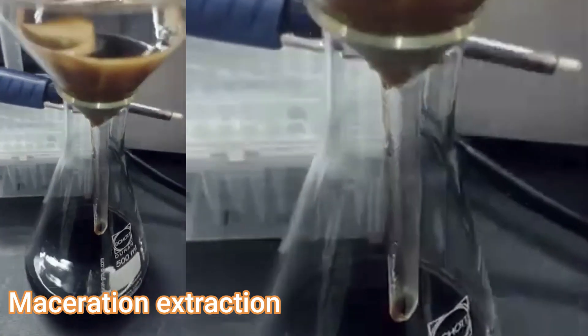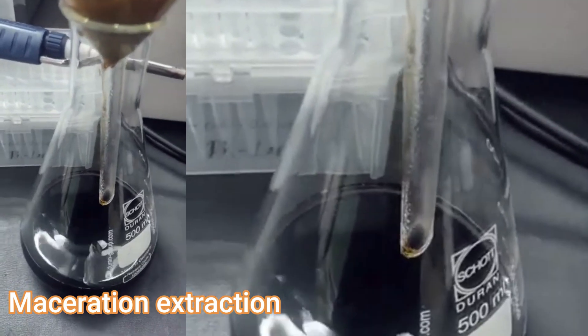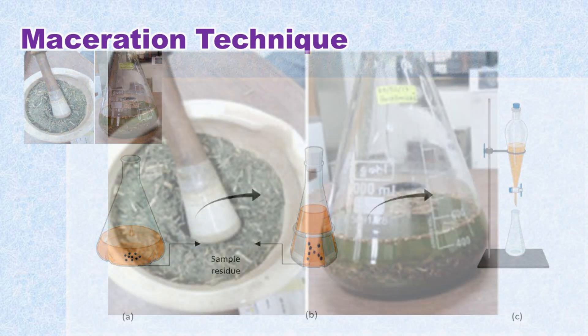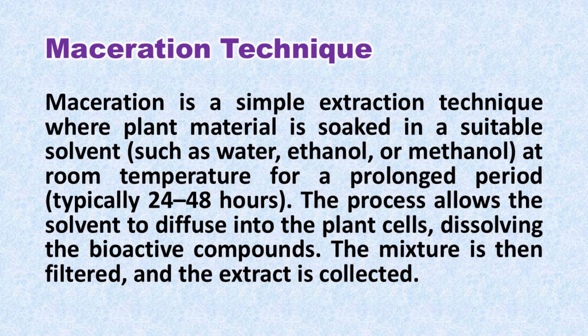If the plant material is very sensitive to temperature, then you go for maceration. The only modification is that the plant material may be chopped or cut into small pieces so that the dissolving process will happen more easily and effectively. Maceration is a very simple and popular technique for the extraction of phytochemicals.